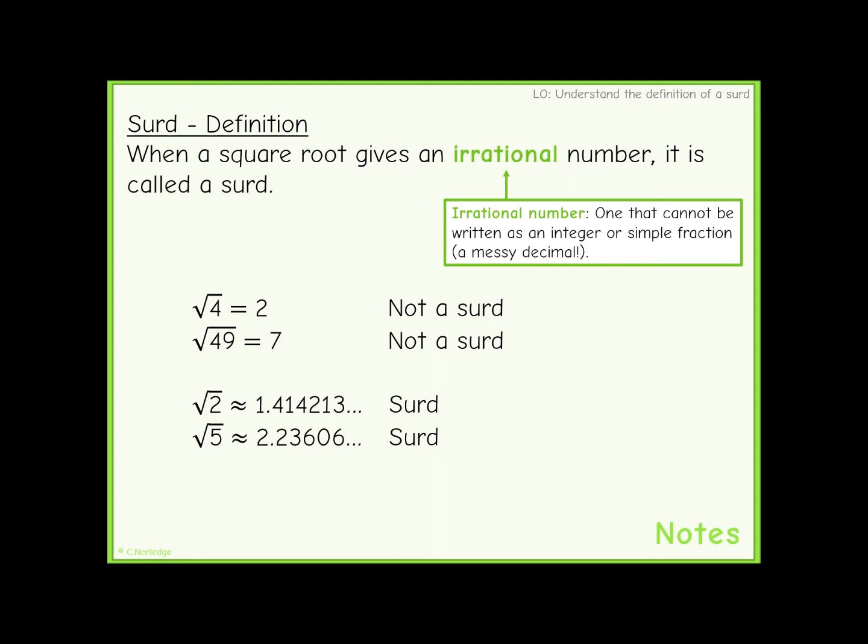On a calculator, the square root of 5 is given as 2.23606 and so on. It's another irrational number, so root 5 is also a surd.